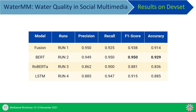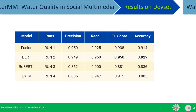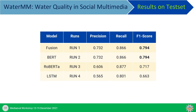These are the results on the development set. We have the Fusion model, then BERT, RoBERTa, and LSTM. We achieved a 95% F1 score on BERT and around 92–93% accuracy. On the test set, we observed that the Fusion model and BERT model achieved the same F1 score and accuracy.